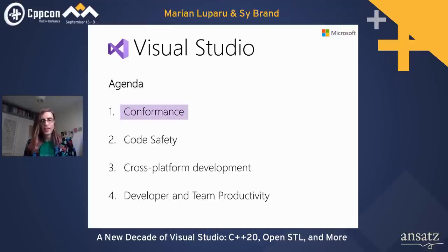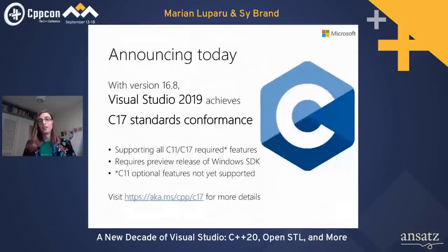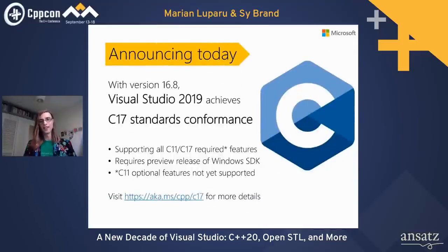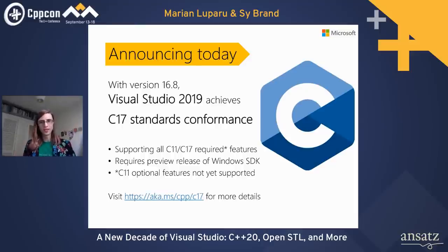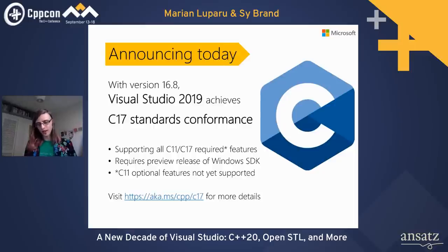Our first big announcement: as of version 16.8, Visual Studio 2019 achieves C17 standards conformance. This includes all C11 and C17 required features — note that does not include the optional C99 features. We do have some on the roadmap, including threads and atomics. This does require a preview release of the Windows SDK due to changes in the Universal C runtime.